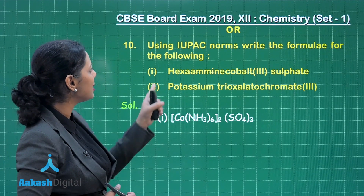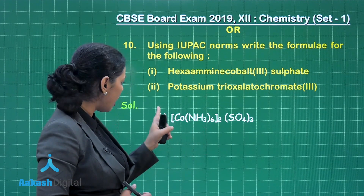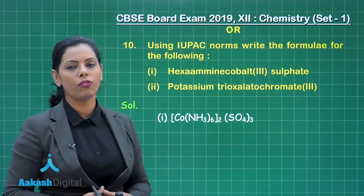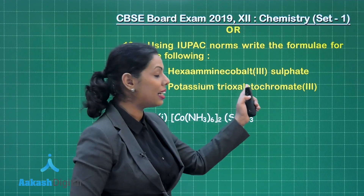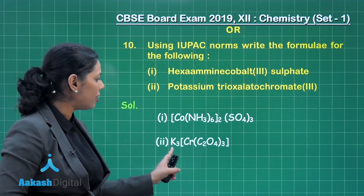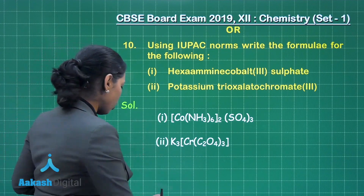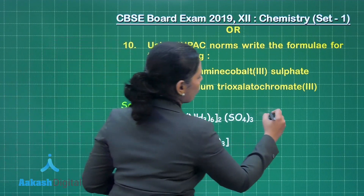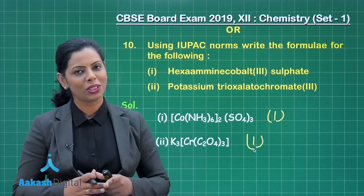For the first compound, hexaaminecobalt(III) sulfate, hexamine means 6 NH₃ ligands are there with cobalt and sulfate ions. This is the correct chemical formula. For potassium trioxalatochromate, the ligand is oxalate ion — three oxalate ions are present along with chromium, giving the formula K₃[Cr(C₂O₄)₃]. Each formula gives you 1 mark, so total 2 marks for this question.